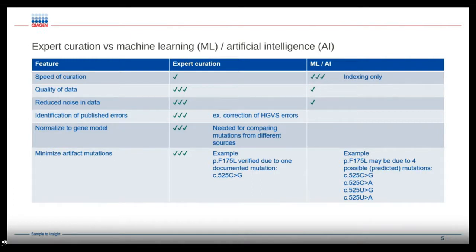We can also minimize artifacts seen in mutational databases. One example is where we found a variant with four possible predicted mutations and were able to verify the correct one for the database. We've also found that the downloadable version of HGMD can really help if you're interested in using a machine learning or AI approach within your own pipeline.